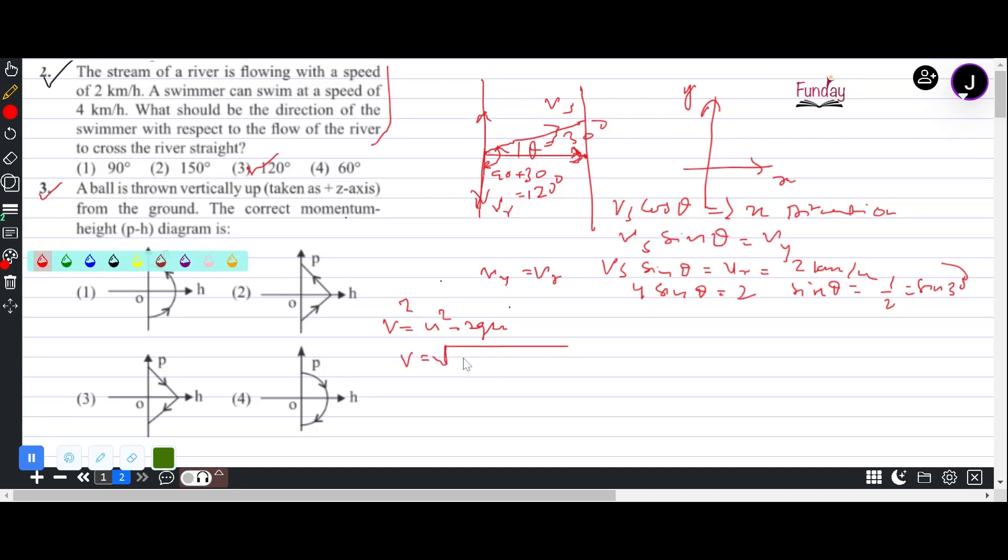And position of the ball has a role to play with the height. So if we write v² = u² - 2gh, v = √(u² - 2gh). That means velocity is not directly proportional to the height it achieves.